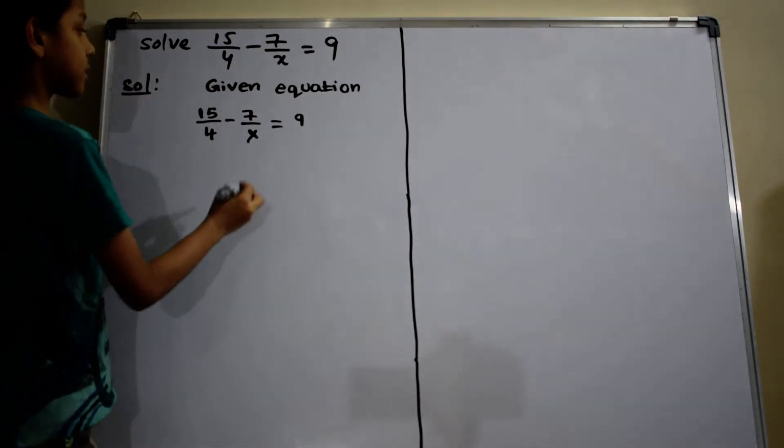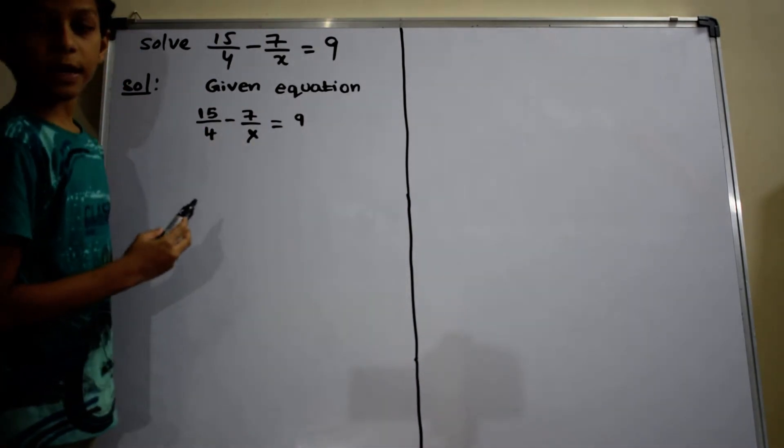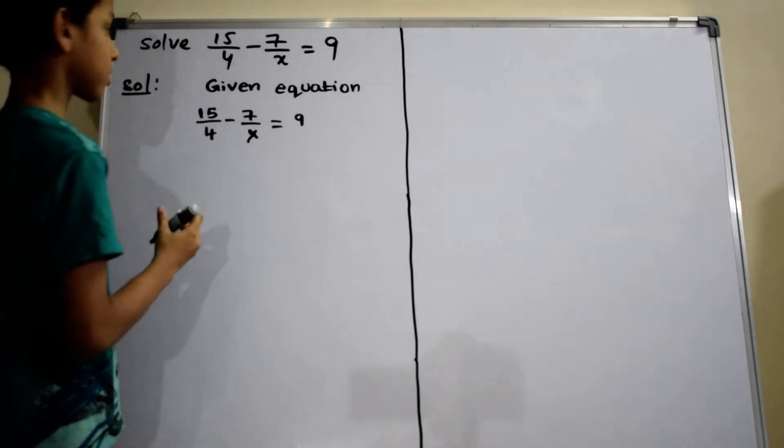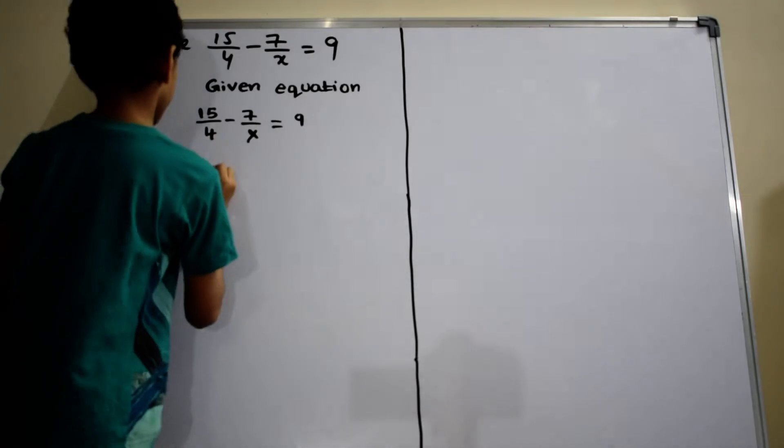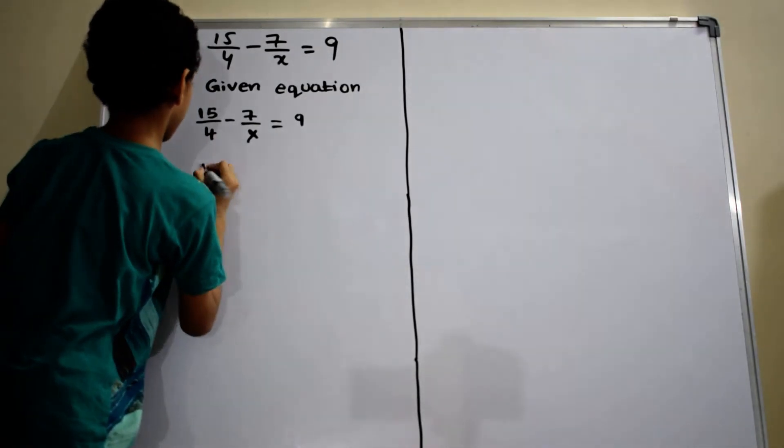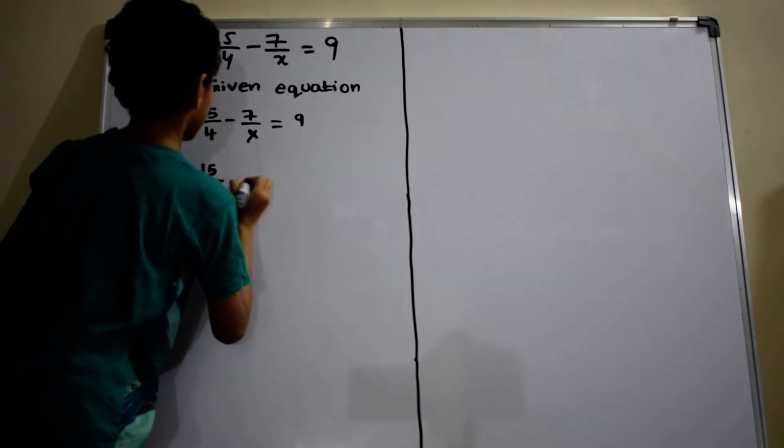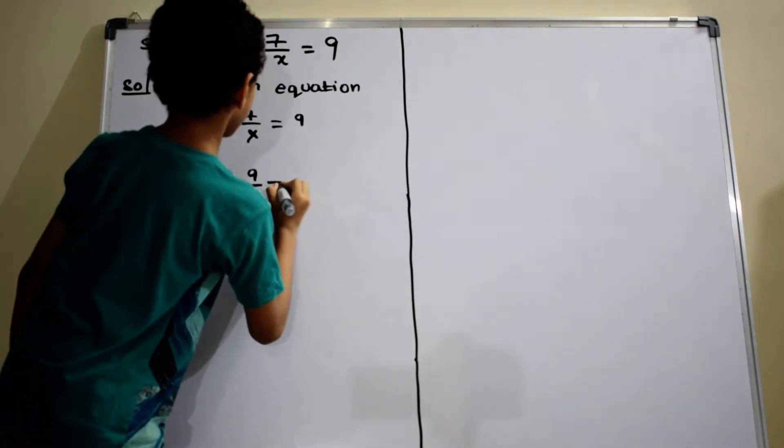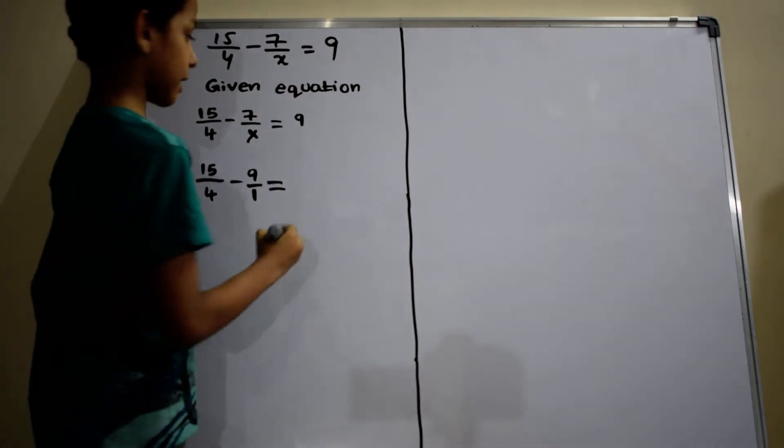Now I am transposing this minus 7 by x to right hand side and this 9 to left hand side. Then it becomes 15 by 4 minus 9. I am writing 9 as 9 by 1 equals to 7 by x.